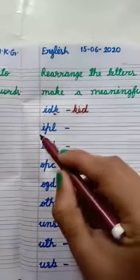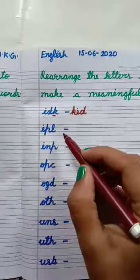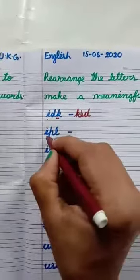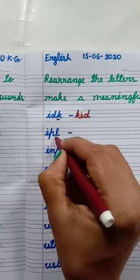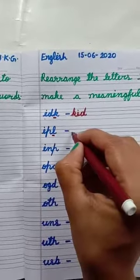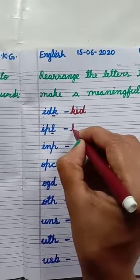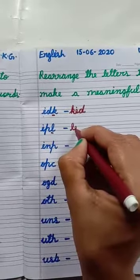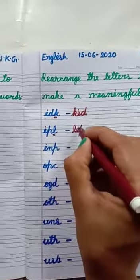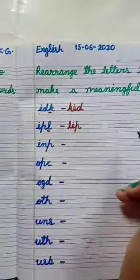The letters are P, L. First, I have written L, then I, then P. L, I, P — Lip.